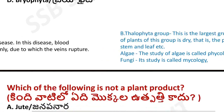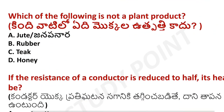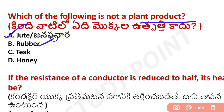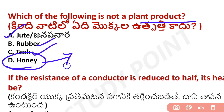Next question: which of the following is not a plant product? Jute is a plant product. Rubber is also a plant product. Honey is not a plant product — it comes from bees, not directly from plants.